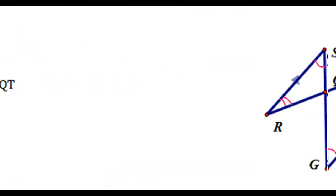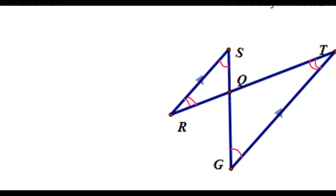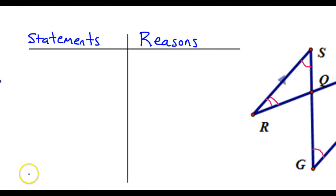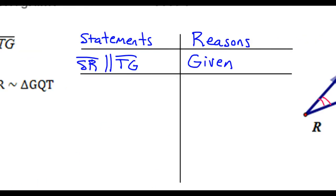Let's get down to the proof. Let's get some statements and reasons going. We always like to start off with the given, so let's go ahead and get that out of the way. We are given that segment SR is parallel to segment TG, and of course the reason is given.